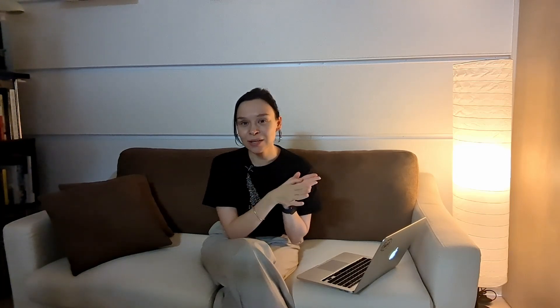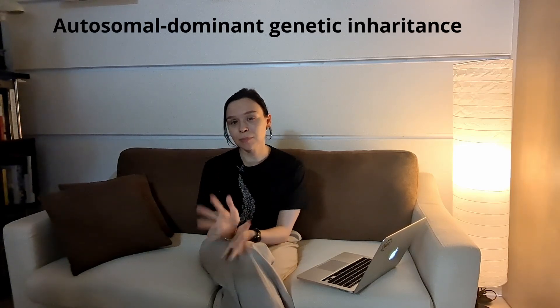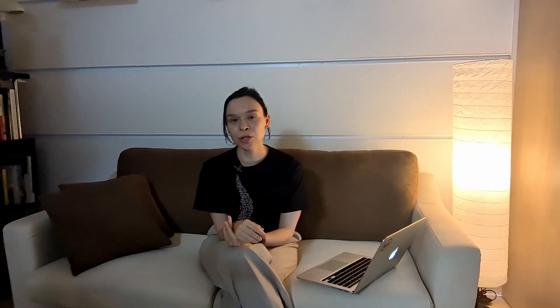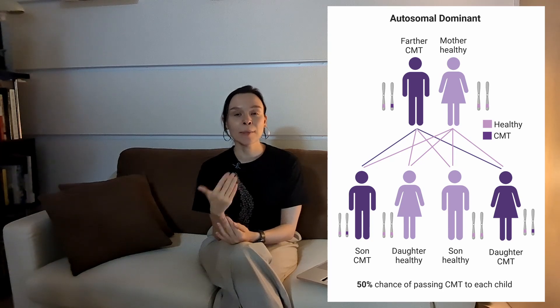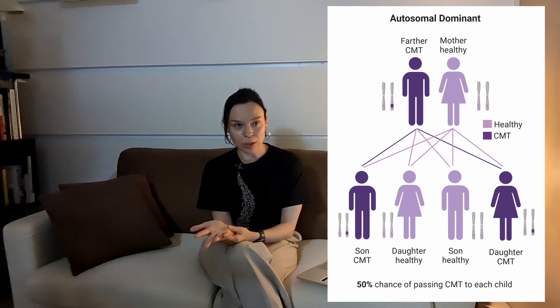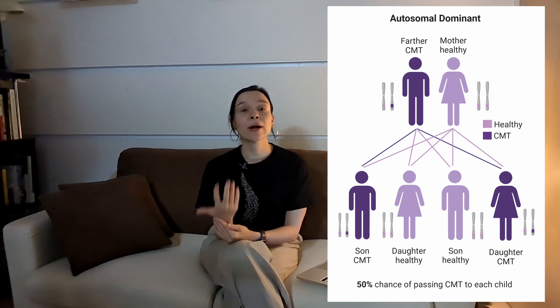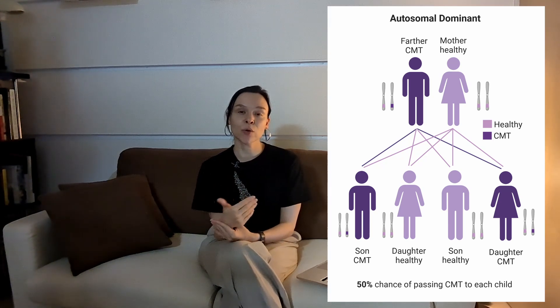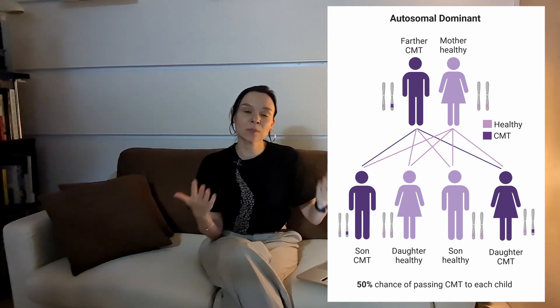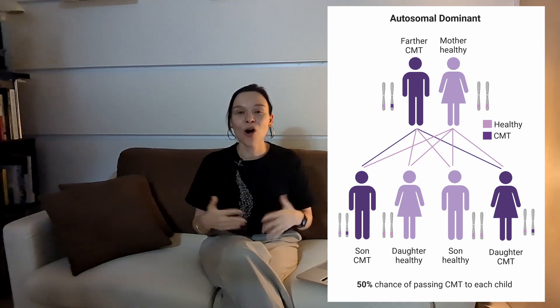What is usually added to 'autosomal' when people talk about the inheritance of CMT1A and the majority of CMT types is 'dominant' — so the inheritance is autosomal dominant. This simply means that a mutation in only one copy of the gene is enough for symptoms to occur. As you can see on this picture, if a father has CMT of the autosomal dominant inheritance pattern, he could pass on this faulty copy to his son or to his daughter, while the second copy coming to the child will be healthy from the mother. The chance of passing on the disease is 50%, irrespective of the sex of the child.